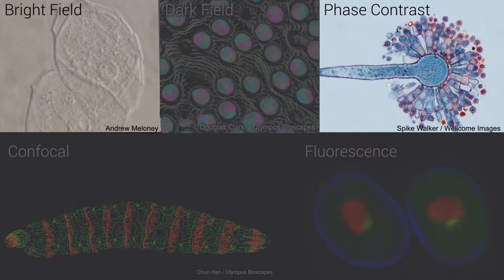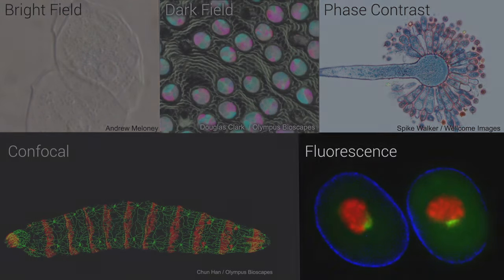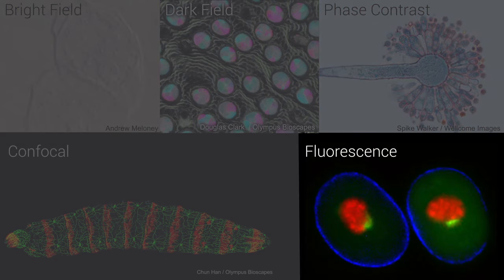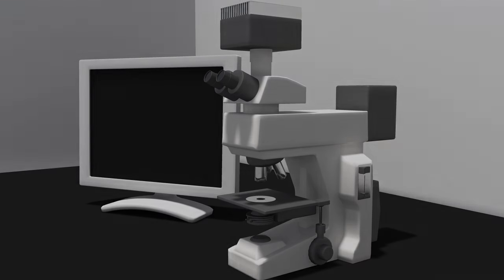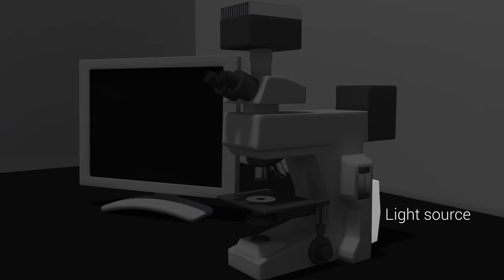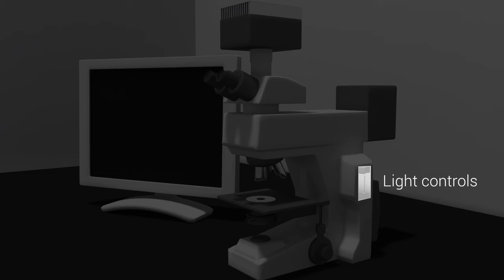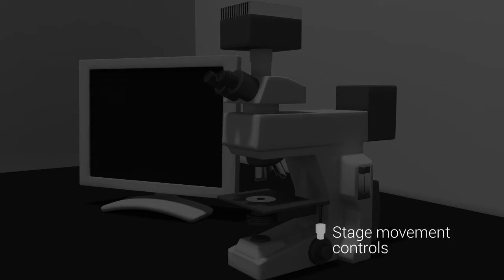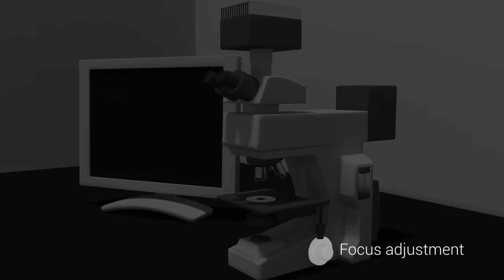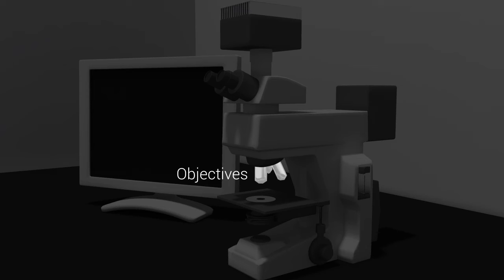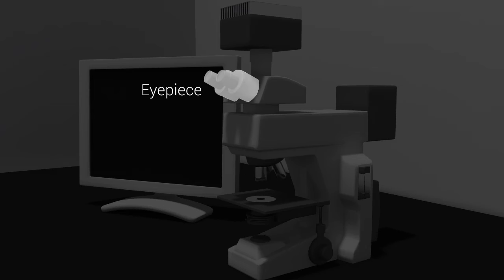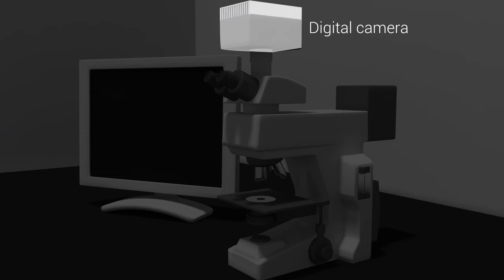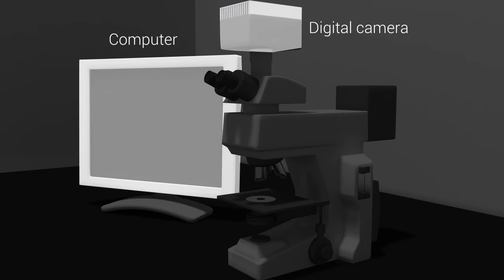We will touch upon bright field and phase contrast microscopy, and then discuss fluorescence microscopy in the next animation. All light microscopes have several components, including a light source such as a halogen light bulb or laser, a light source on-off switch with a knob to adjust its intensity, a diaphragm and condenser to focus the light onto the sample, a stage to hold the sample, controls to move the stage, focus knobs for coarse and fine focus adjustment, objectives to magnify the sample, and an eyepiece through which the researcher can view the sample. In addition, microscopes are often fitted with a digital camera and a computer for a scientist to capture images viewed through the microscope.